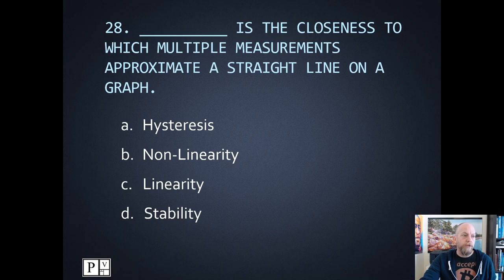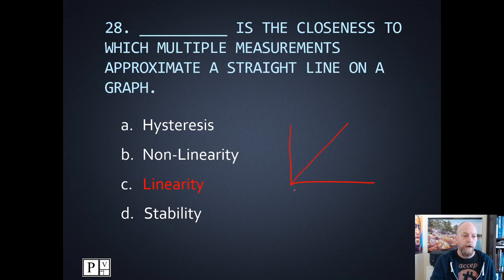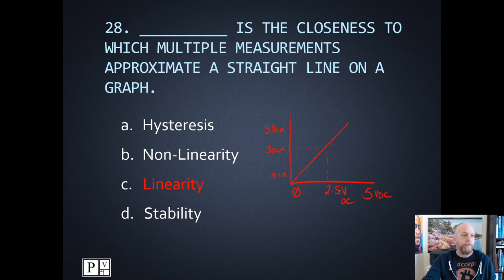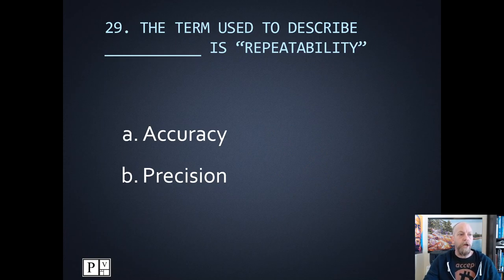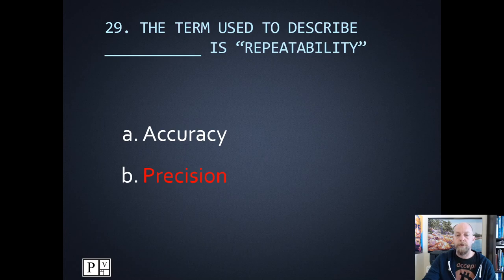Number twenty-eight: which one is closest to describing when multiple measurements approximate a straight line on a graph? Straight line on a graph means a linear output. In the lab, we had our level going from 10 to 50 centimeters with a zero to five volt DC output, and we had a nice linear relationship — at 50% being 30 centimeters, we got 2.5 volts DC out. Number twenty-nine: which one is the term to describe repeatability? Every time you repeat a sensor measurement and it gives you the same answer, that means it's precise. Repeatability and precision are the same thing.